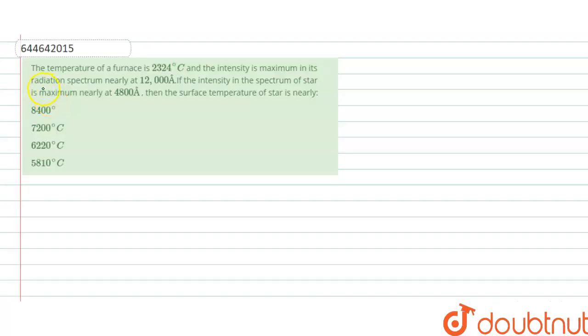The question is that the temperature of the furnace is 2324 degrees centigrade and the intensity is maximum in its radiation spectrum nearly 12000 angstrom. If the intensity in the spectrum of a star is maximum nearly 4000 angstrom, then the surface temperature of the star is nearly?